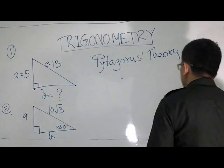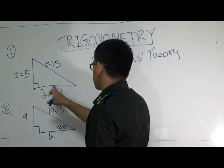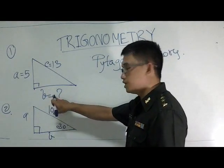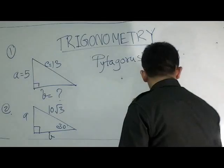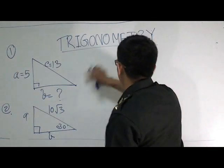For example, we have to solve for an unknown side, and it's B, by the Pythagoras theory.